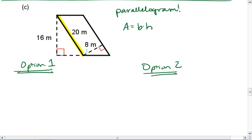Then 8 meters here is the height, it creates a right angle. So I get area equals base times height equals 20 times 8 equals 160 meters squared.